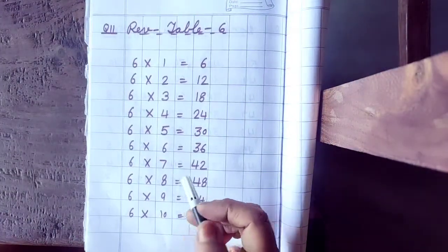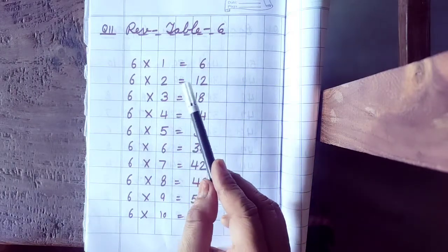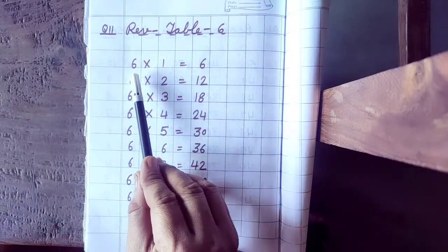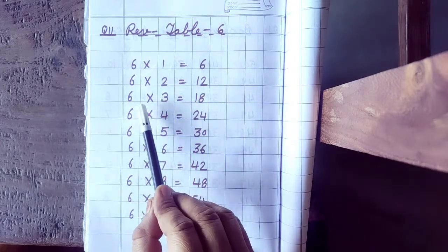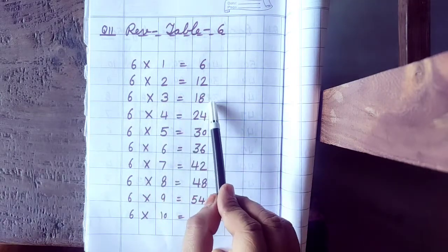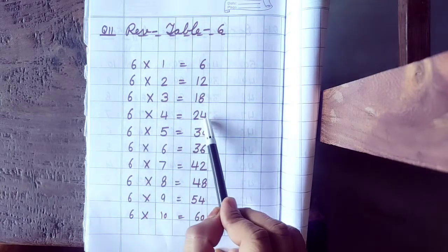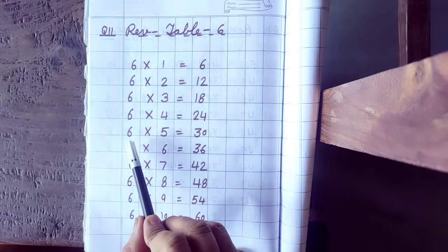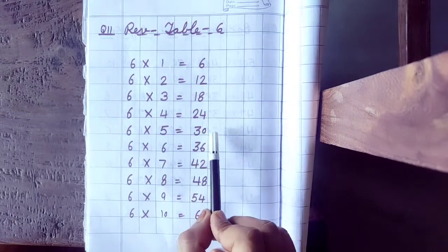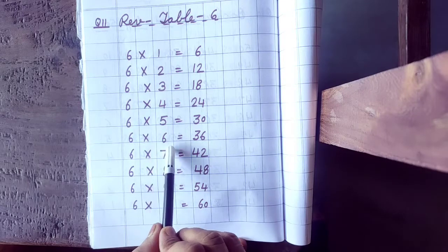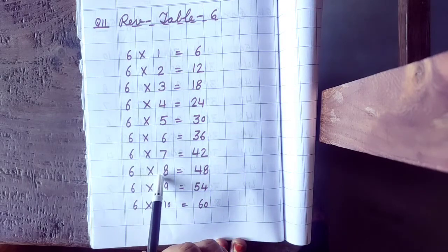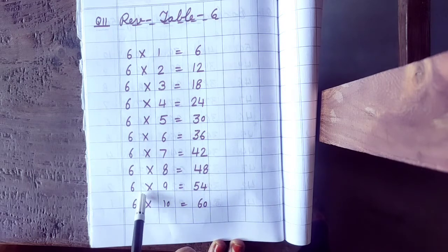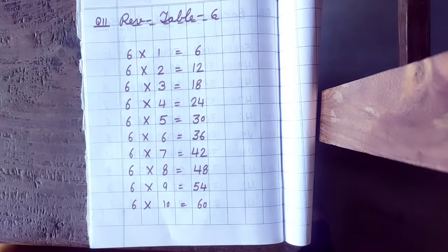You know the table of 6 very well: 6 ones are 6, 6 twos are 12, 6 threes are 18, 6 fours are 24, 6 fives are 30, 6 sixes are 36, 6 sevens are 42, 6 eights are 48, 6 nines are 54, 6 tens are 60.